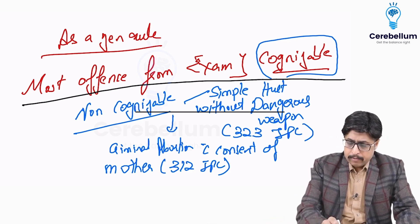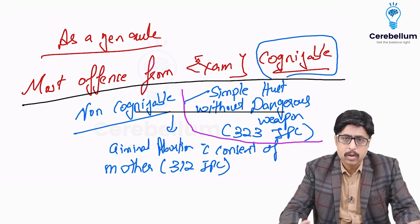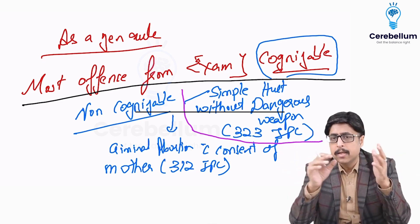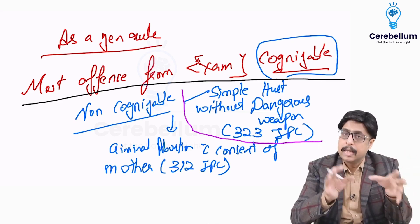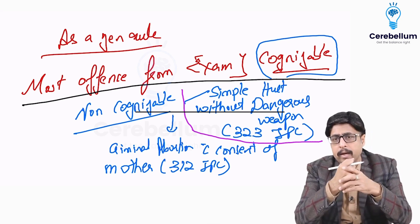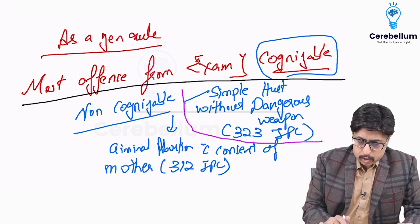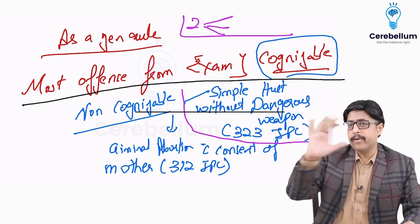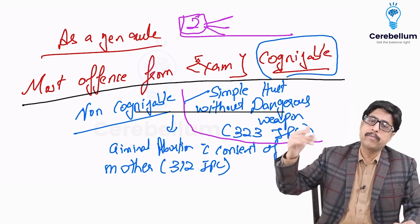Two non-cognizable offenses to remember: first, simple hurt without a dangerous weapon, defined under Section 323 IPC — the hurt must be very simple and done without a dangerous weapon. Second, criminal abortion with the consent of the mother, defined under Section 312 IPC. These are the two IPC sections that are non-cognizable; otherwise, most offenses are cognizable.